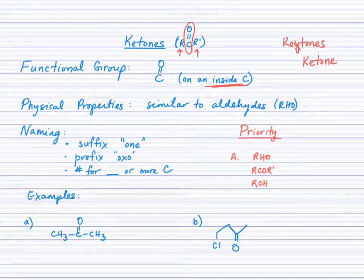What do we call this C double bond O? I think I forgot to write the name here. This is a carbonyl group. So the name of the functional group of ketones is carbonyl. Some people say carbonyl.